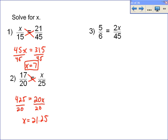The last one, again, you do cross products. It doesn't matter that it's a little bit different. 5 times 45 is equal to 225. And then this one is going to be 6 times 2x. Well, just do 6 times 2, which is 12. And so you end up with 12, and then you can't forget the x.